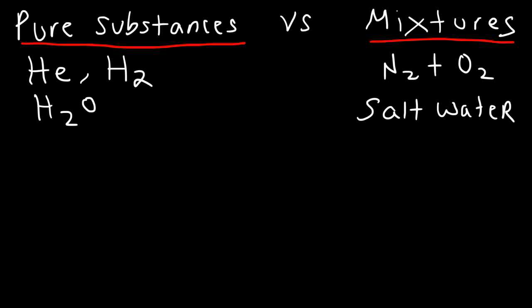A pure substance has a constant composition, but a mixture has a variable composition. Another way to distinguish a pure substance from a mixture is how you can separate them. A mixture can be separated into its components by means of a physical process, whereas the components of a compound — a pure substance — can be separated by means of a chemical process.